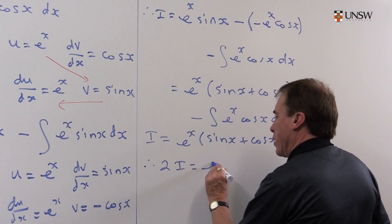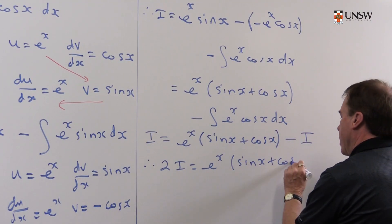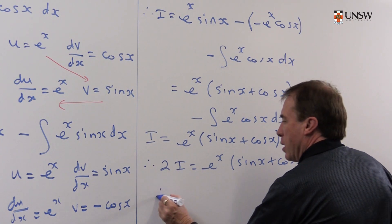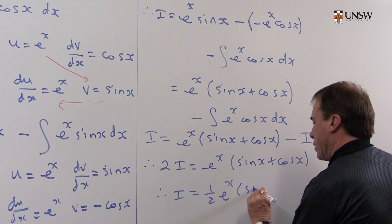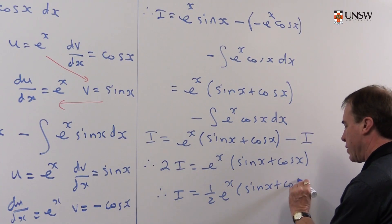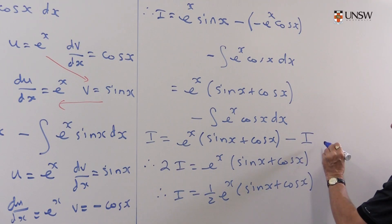So therefore, twice the integral that you started with is e to the x times sin x plus cos x. So I can divide by 2 and get a half e to the x sin x plus cos x. And I better put a plus c should go in somewhere, probably at this stage here. I'll put a plus c in, and there's the plus c.